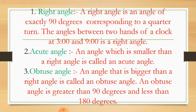An angle that is bigger than a right angle is called an obtuse angle. An obtuse angle is greater than 90 degrees and less than 180 degrees.